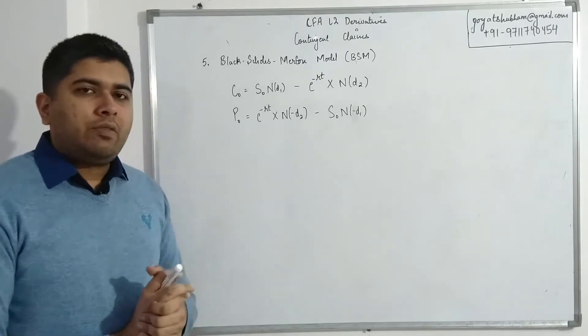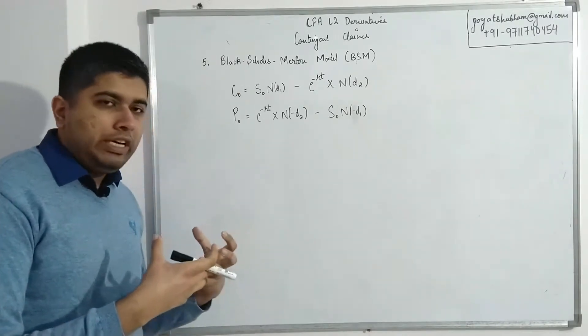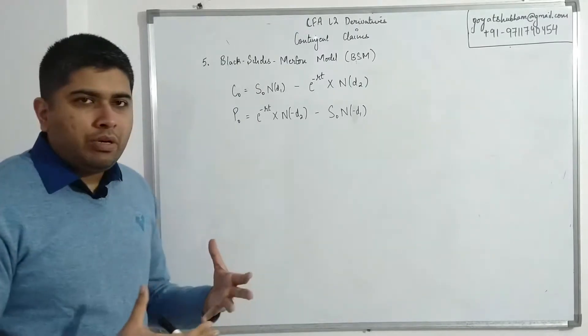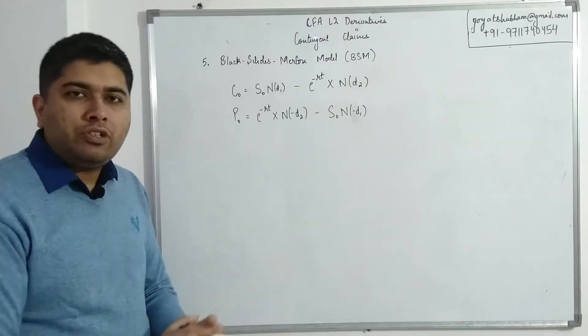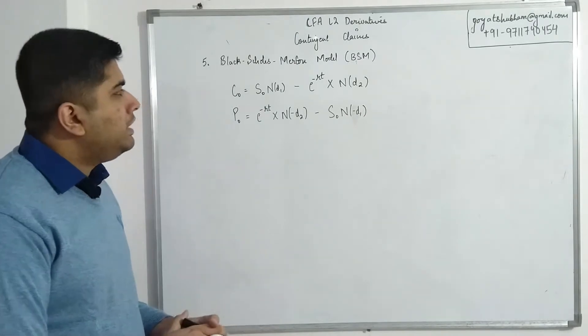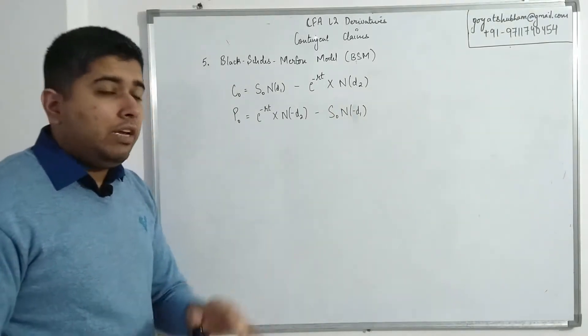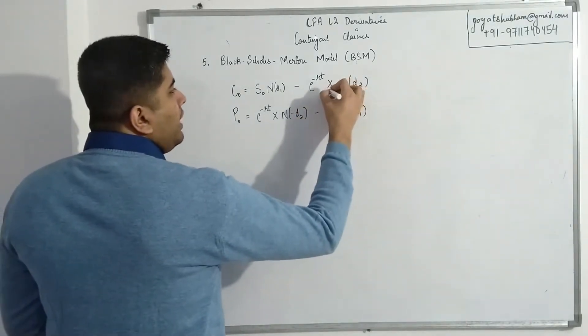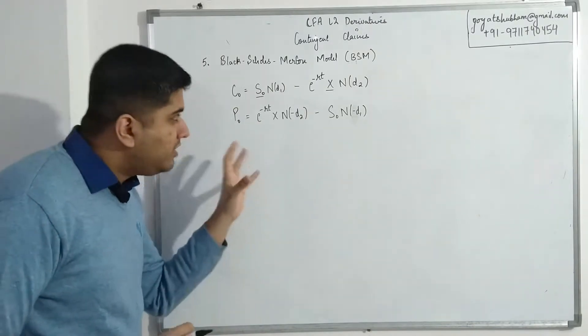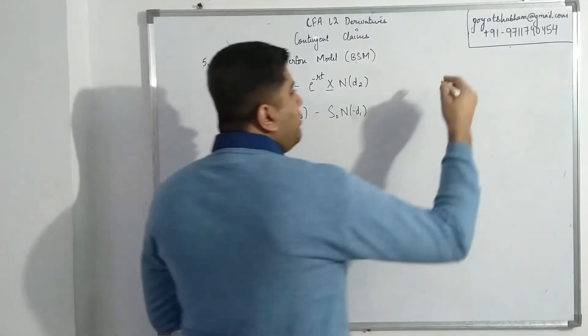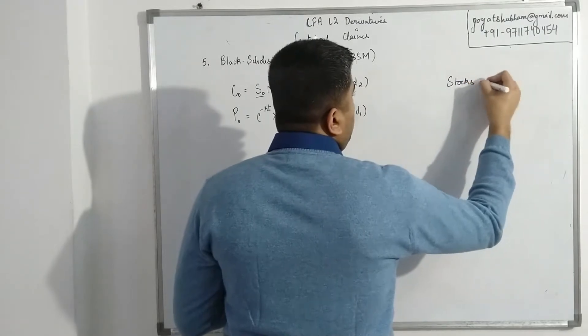If you remember in binomial model what we did was: in order to calculate the value of the call option, the process was simple—whatever the future expected prices were, I compared them with some sort of spot price. Over here also, what I'm trying to say is that whatever your exercise price is, there would be probabilities involved—I'll cover all the elements, don't worry about it—but your exercise price compared with your current spot price of the underlying.